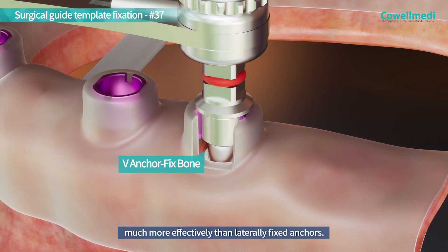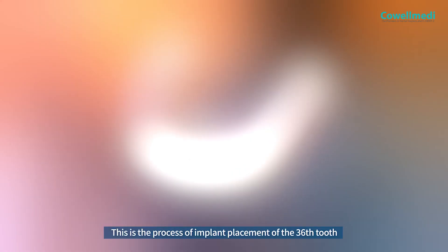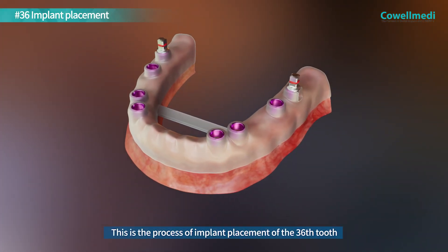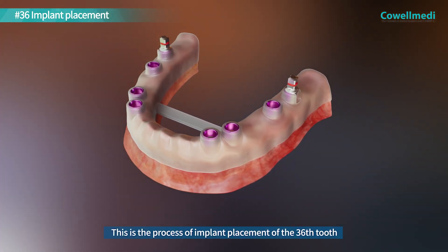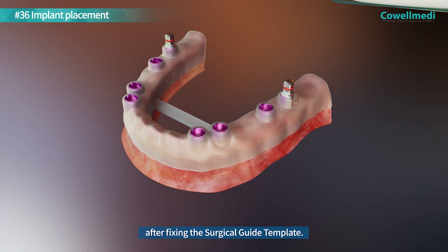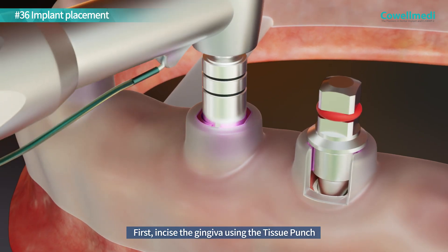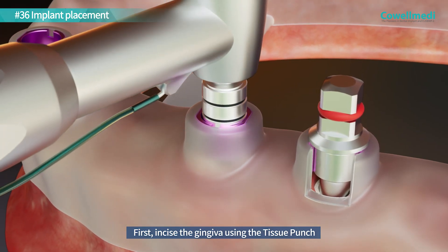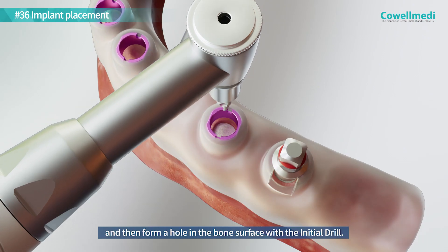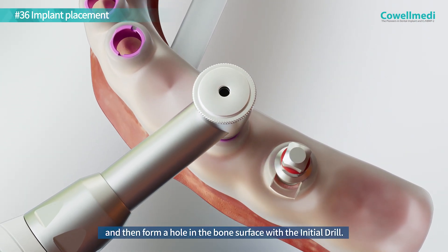This is the process of implant placement for the 36th tooth. After fixing the surgical guide template, first incise the gingiva using the tissue punch, and then form a hole in the bone surface with the initial drill.